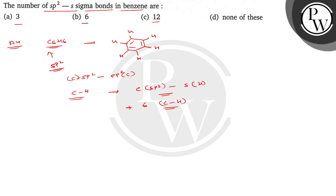So the SP2-S sigma bonds in benzene is only 6. The correct option is B. I hope you understood well. Best of luck.